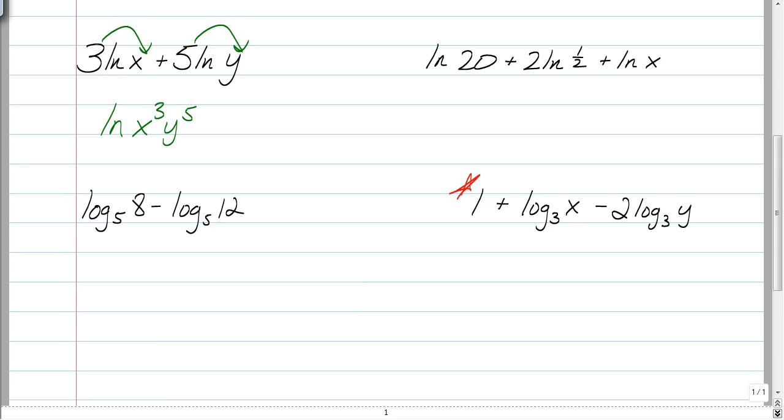Next one, a little bit trickier. Not really, but you have to simplify. So, we have an ln, and then we have a 20 times, because of the plus sign. We have an exponent of 2 for a fraction of 1 half.